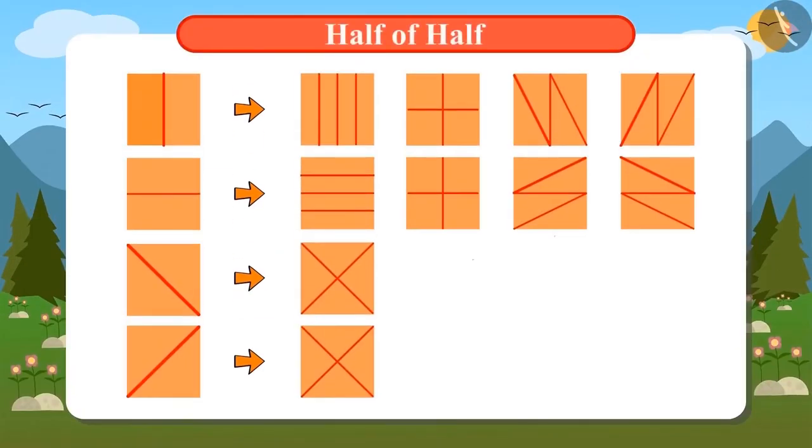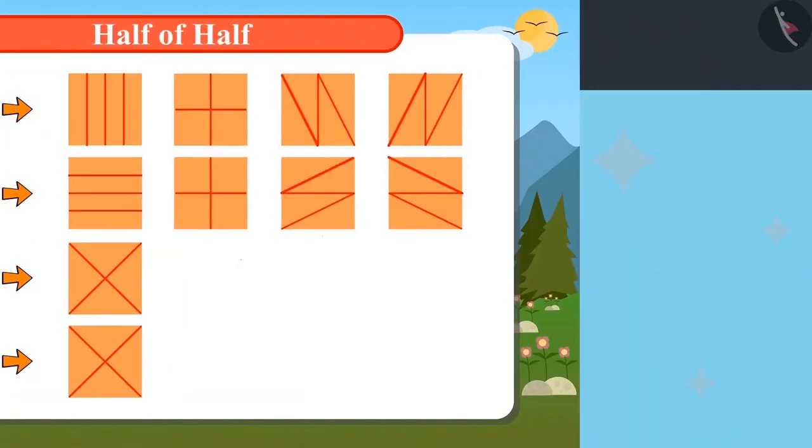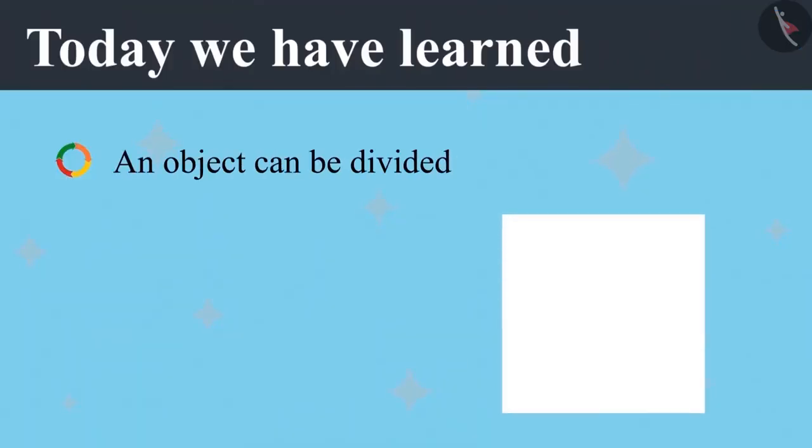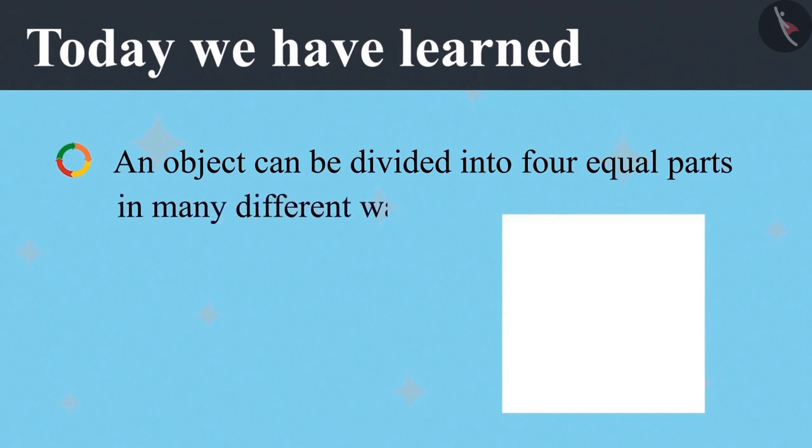Vandana divided a square-shaped figure into eight one-fourth parts. You can also take a square-shaped paper and observe the number of ways you can find to divide it into four equal parts.